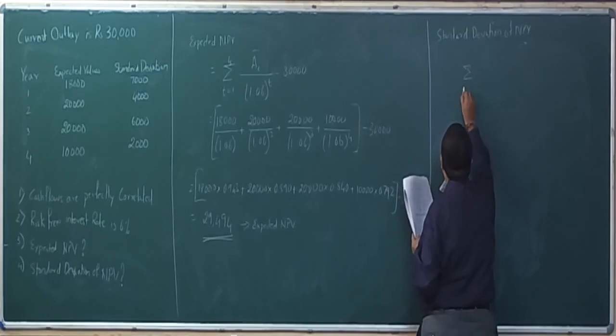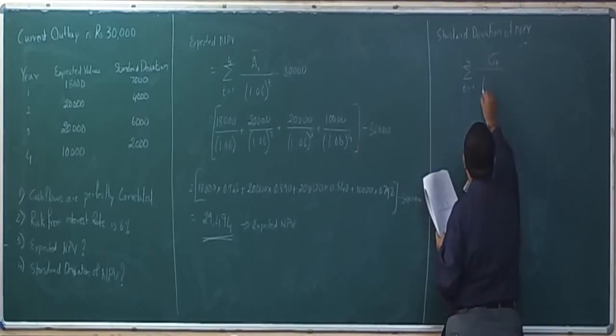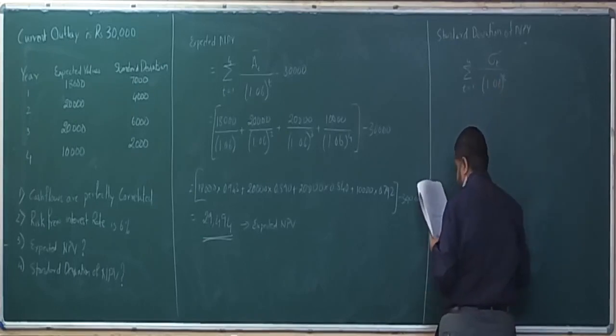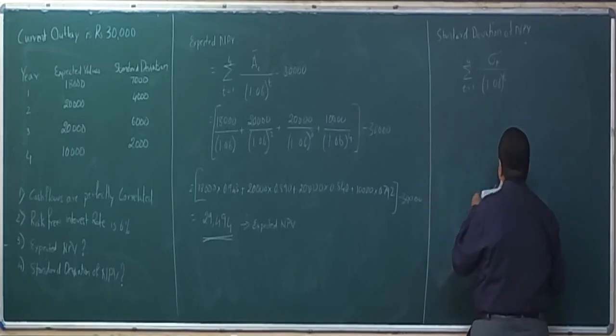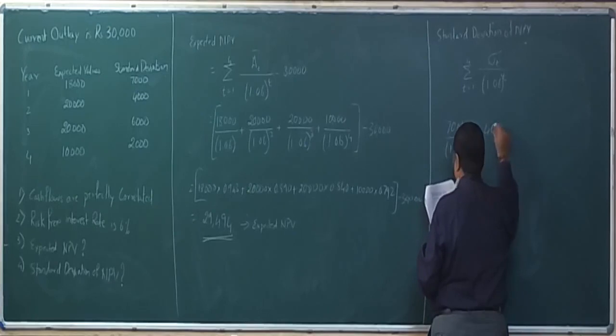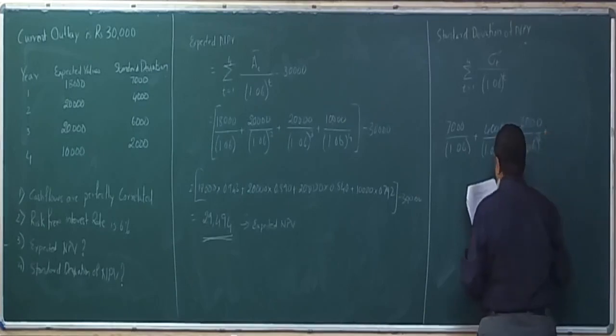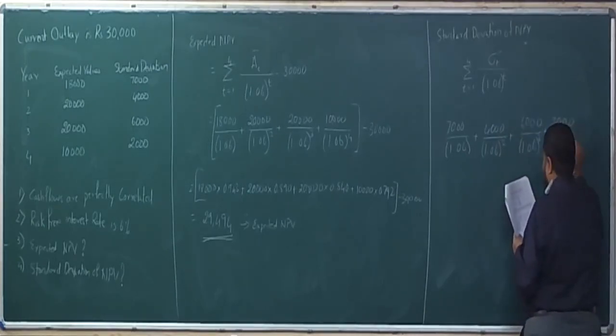This is summation T equals 1 to 4. It will be 7,000 divided by 1.06 plus 4,000 divided by 1.06 square plus 6,000 divided by 1.06 raise to 3 plus 2,000 divided by 1.06 raise to 4.